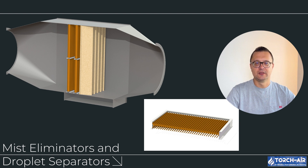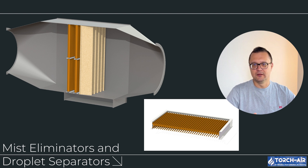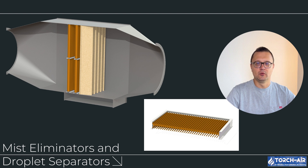These devices are designed to capture mist, droplets, and fine particles from exhaust streams, ensuring that only clean air is released into the environment. So let's break down what mist eliminators and droplet separators are, how they work, the different types, and why they are essential in many industrial operations.